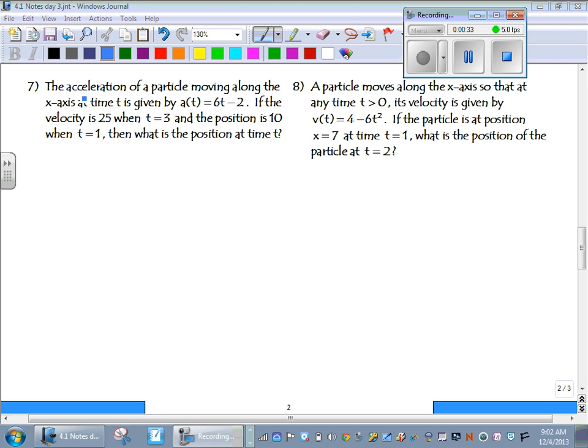So number 7 says the acceleration of a particle moving along the x-axis at time t is given by a of t equals 6t minus 2. If the velocity is 25 when t is 3, and the position is 10 when t equals 1, what's the position at time t?